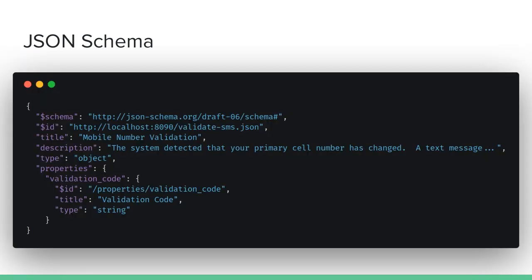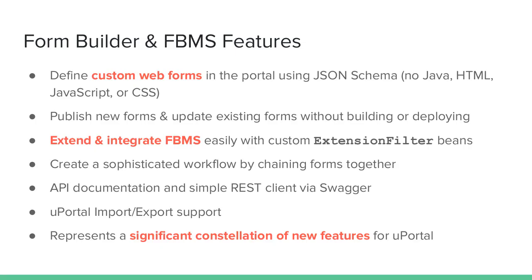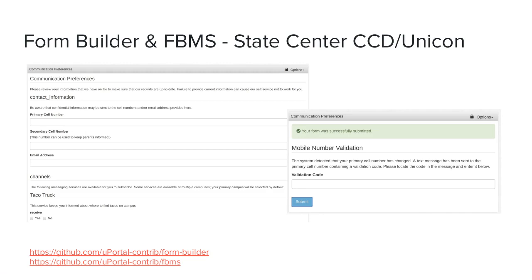You can publish new forms and update existing forms without building or deploying your portal — it's all data-driven. You can extend and integrate with FBMS easily by defining custom extension filter beans. Using Form Builder and FBMS, you can create a sophisticated workflow by chaining forms together. FBMS includes API documentation and a simple REST client through Swagger, and there is uPortal import-export support for FBMS. I should say that Form Builder and FBMS are not merely a new web component — they represent a significant constellation of new capabilities for uPortal.